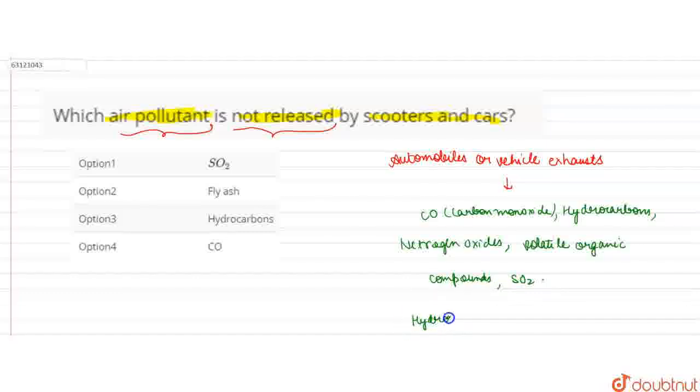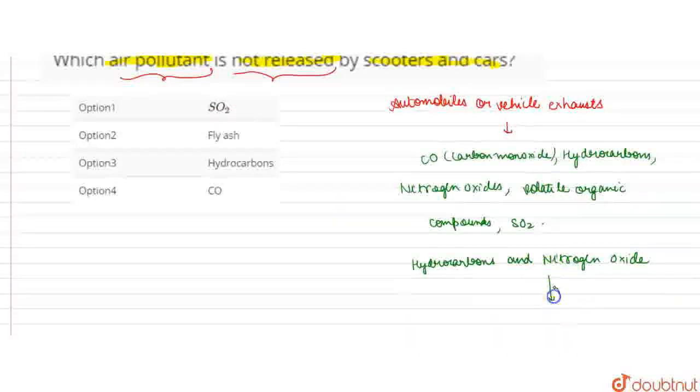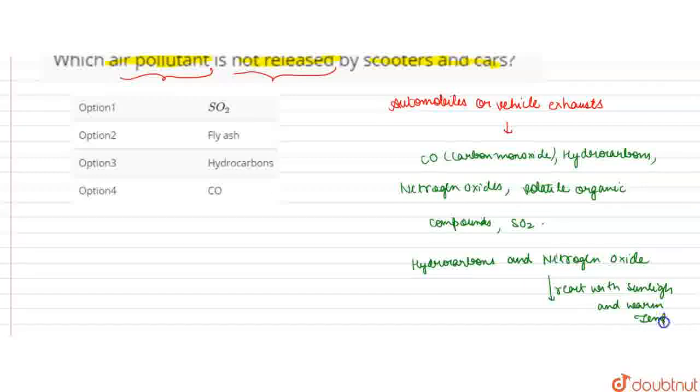Hydrocarbons or nitrogen oxides react with sunlight and warm temperature to form Ground Level Ozone.